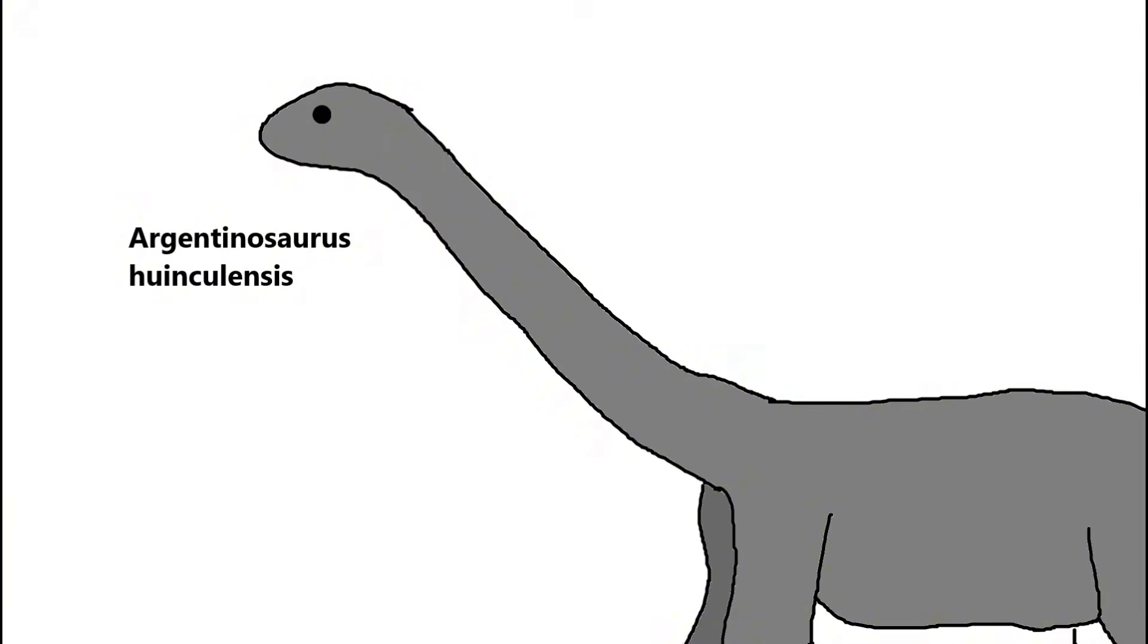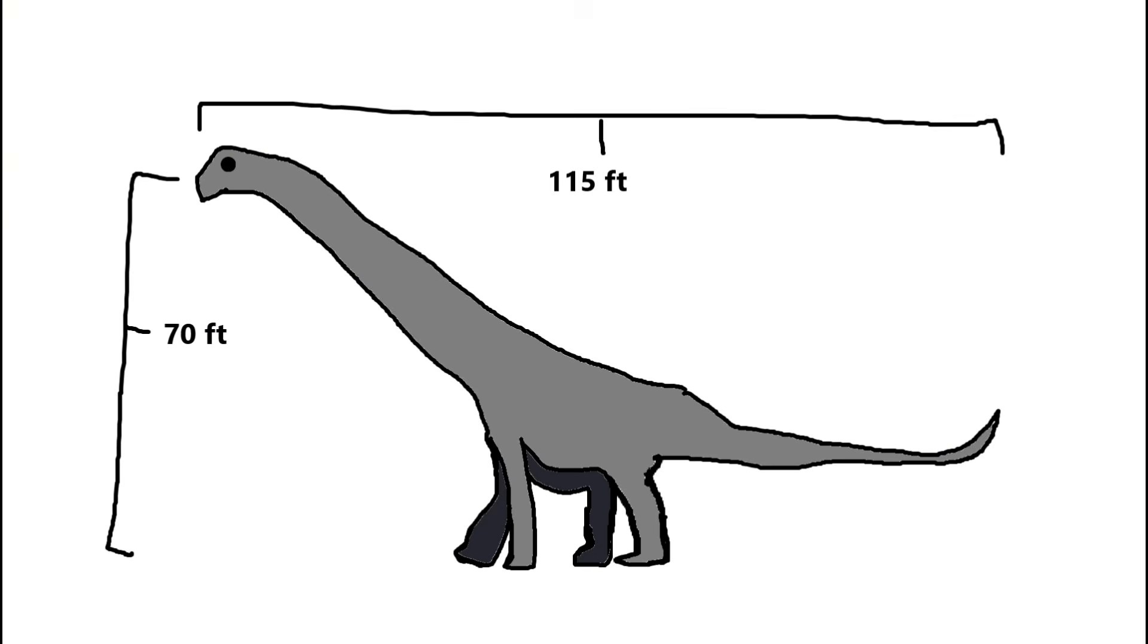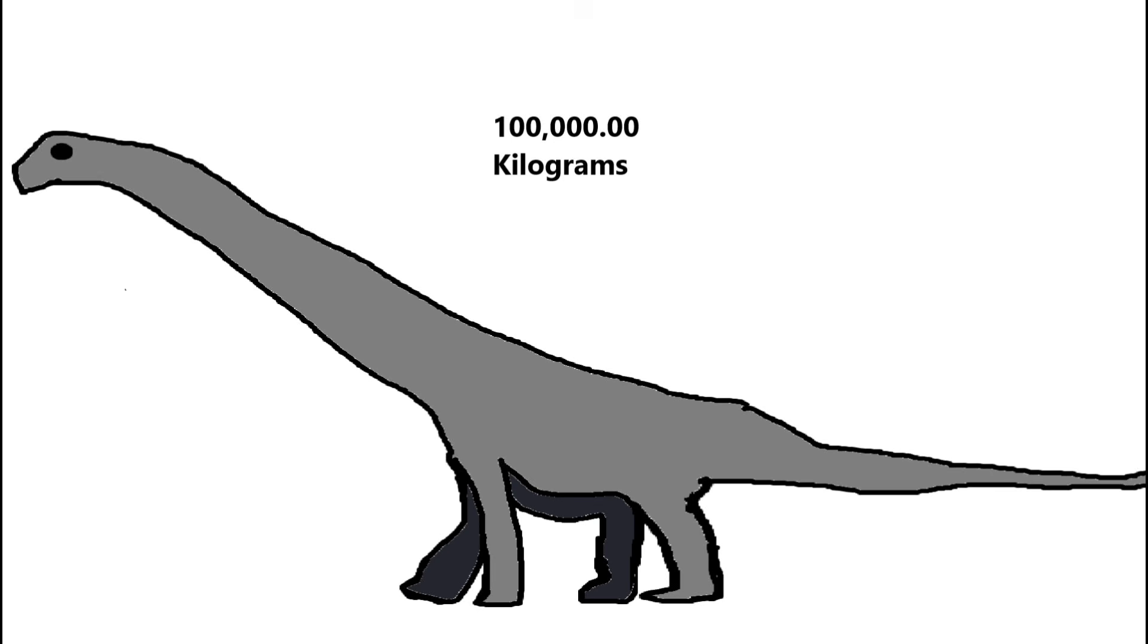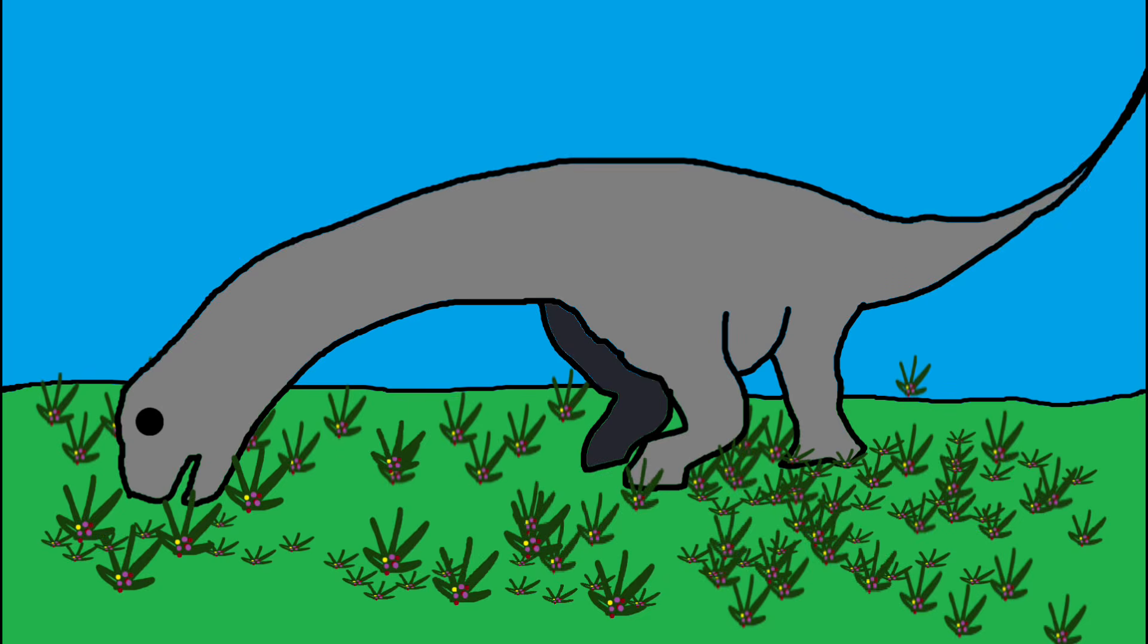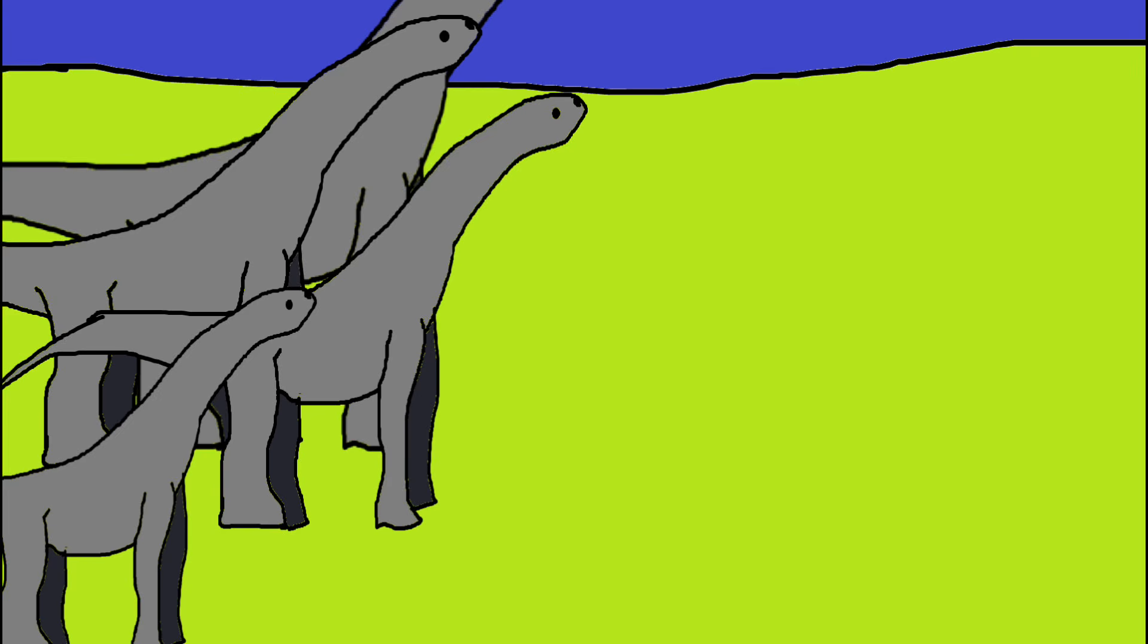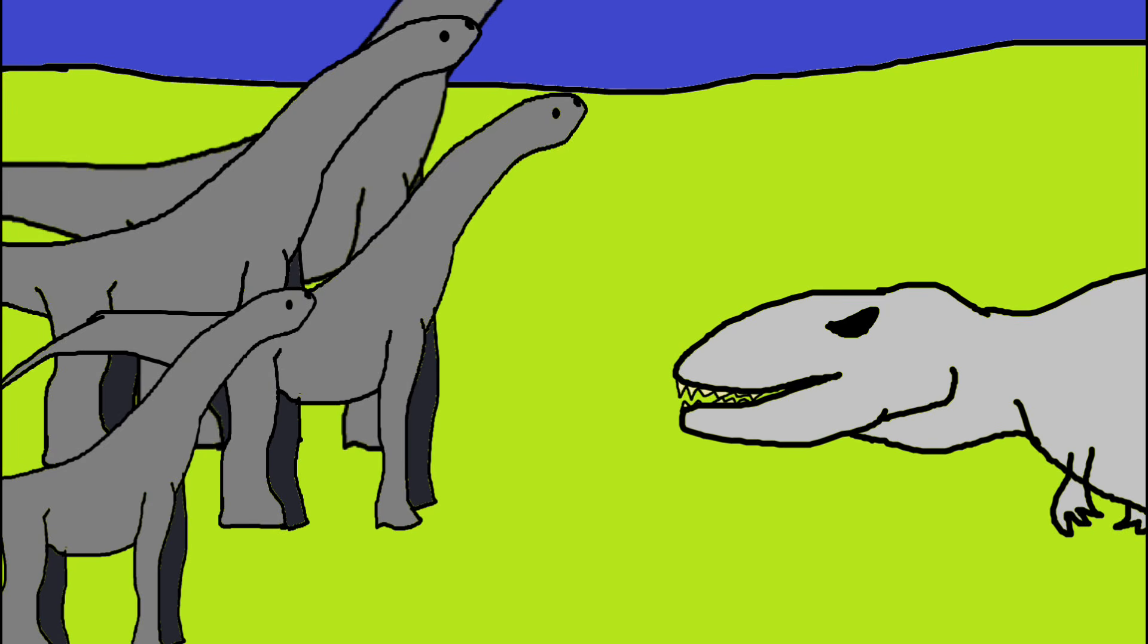Argentinosaurus was a dinosaur of unimaginable scale, one of the largest land animals to ever walk the earth. This titanic herbivore measured up to 115 feet long and weighed as much as 100 tons. Living in the late Cretaceous period in South America, it likely grazed on tall vegetation. It had a long neck, enabling it to reach food sources unavailable to other species. Fossils suggest that it moved in herds for protection, as even its massive size couldn't fully deter predators like the Giganotosaurus. Argentinosaurus remains a symbol of nature's incredible extremes.